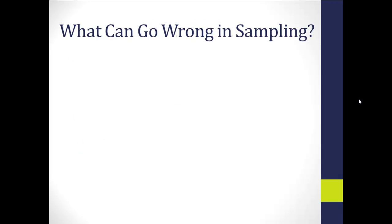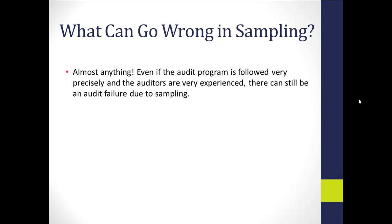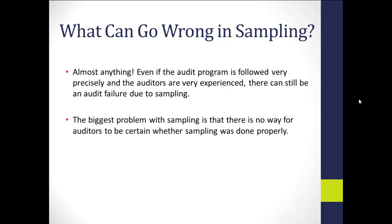What can go wrong in sampling? Unfortunately, almost anything can go wrong. Even if the audit program is followed precisely and auditors are very experienced, there can still be audit failures due to sampling. The biggest problem is that there is no way to be certain whether the sampling was done properly — you might have used the wrong check number sequence, mistaken an unauthorized signature, or confirmed an account not on the sample list. Unless someone redoes all the work, there's no way to know.